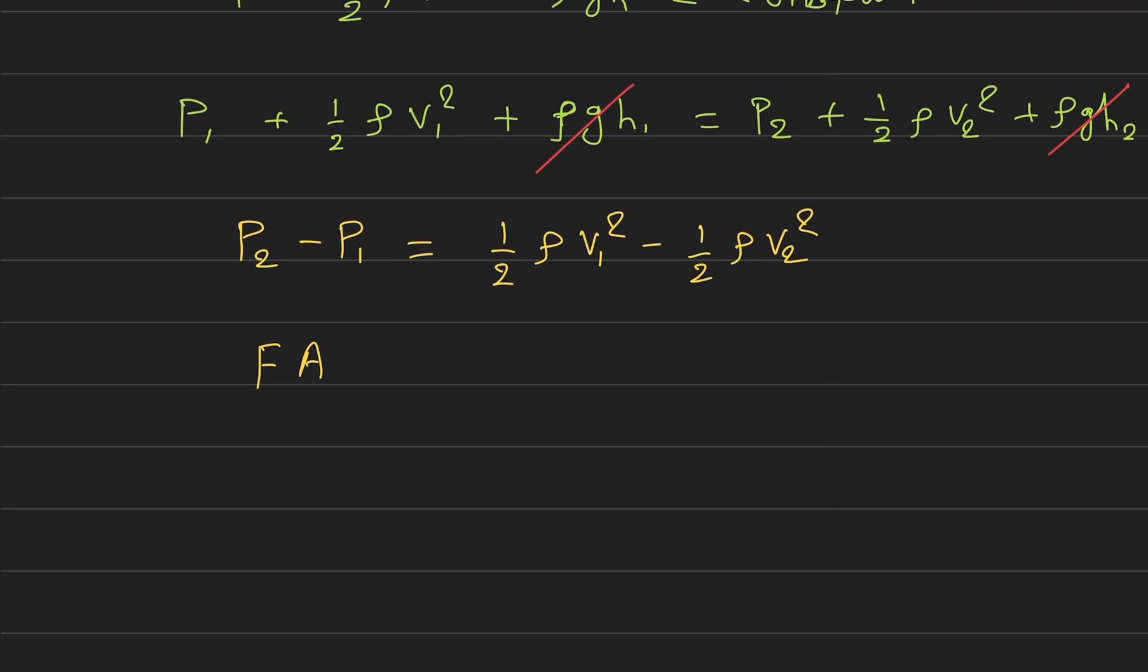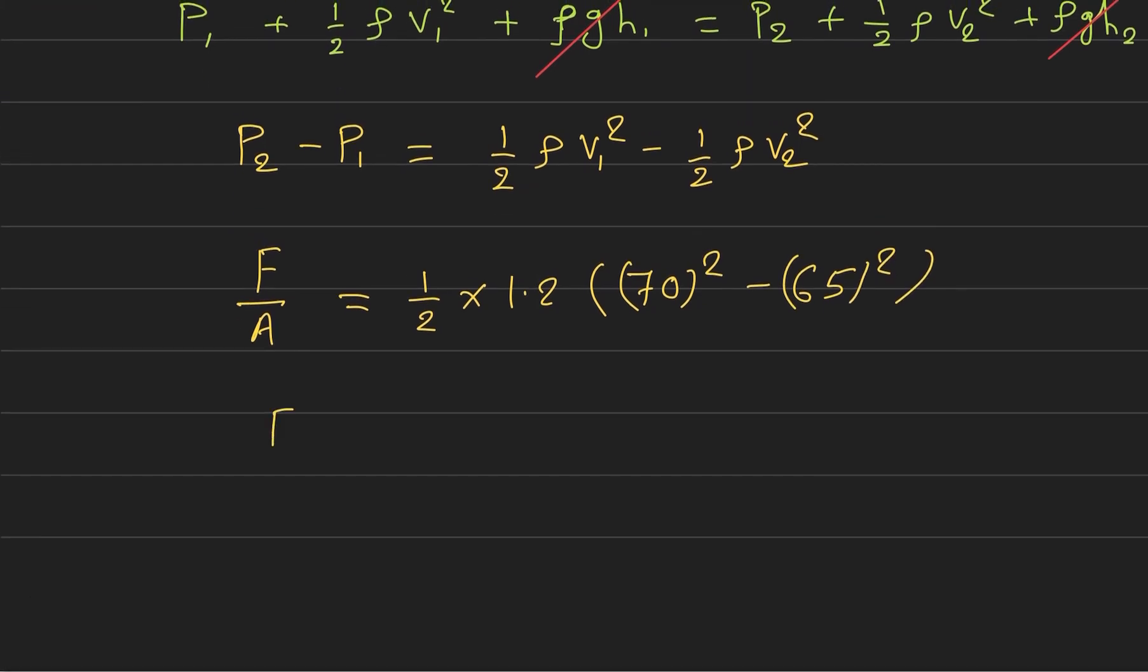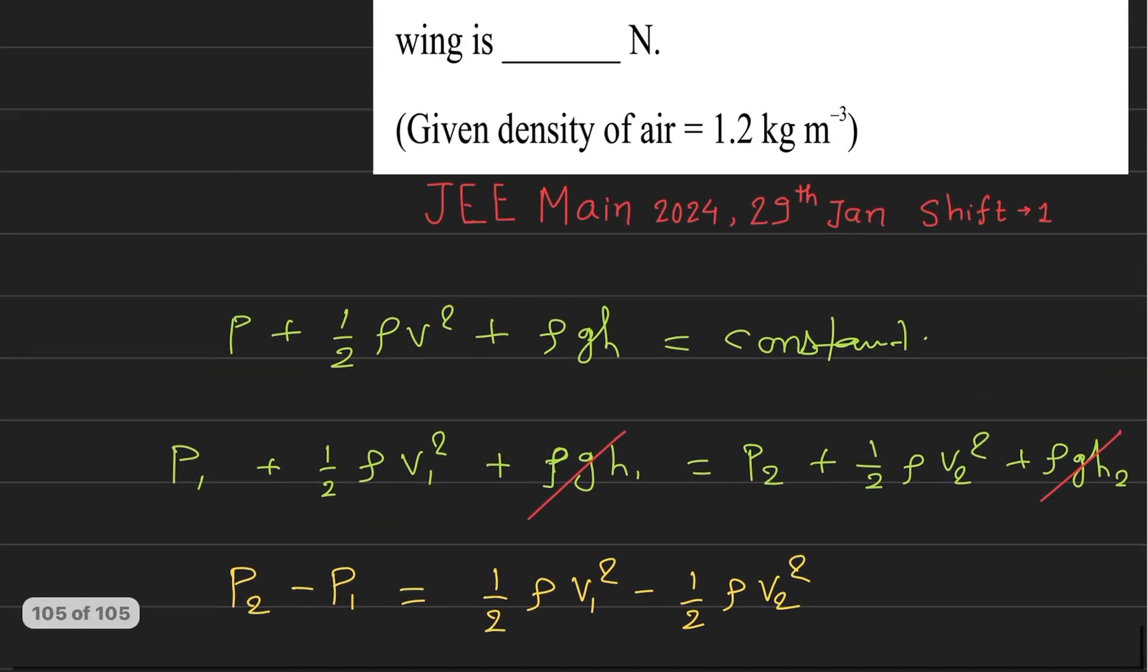The force equals the pressure difference times area. So F equals half times 1.2 times 70 squared minus 65 squared times the area 2 square meters.